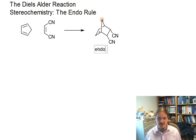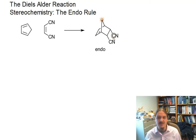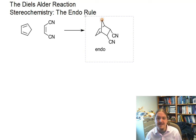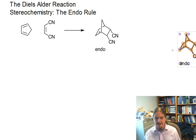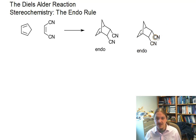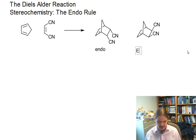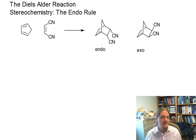This one I've just drawn is called the endo diastereomer because the nitriles — or whatever functional groups these are — are pointing down, tucked inside. If you think about 'endoskeleton,' endo means inside. There's also a possibility to get something called exo, where the nitriles are up relative to the bridgehead — they're on the outside.